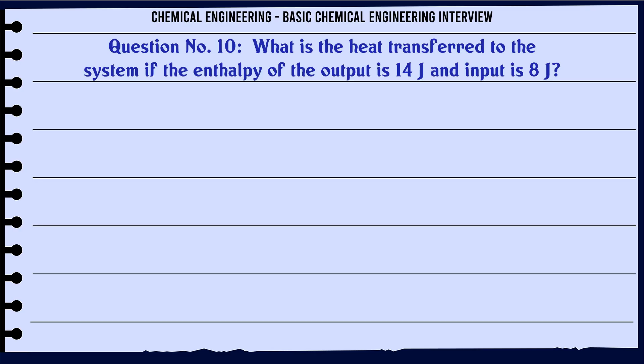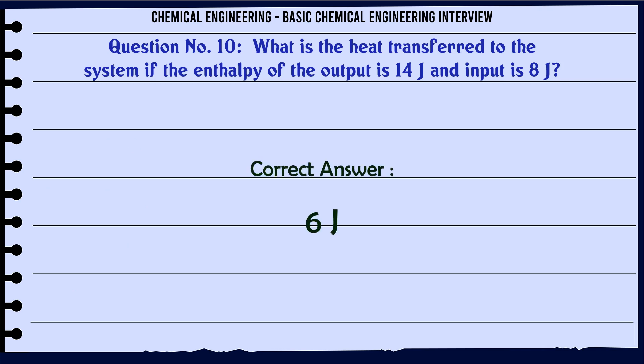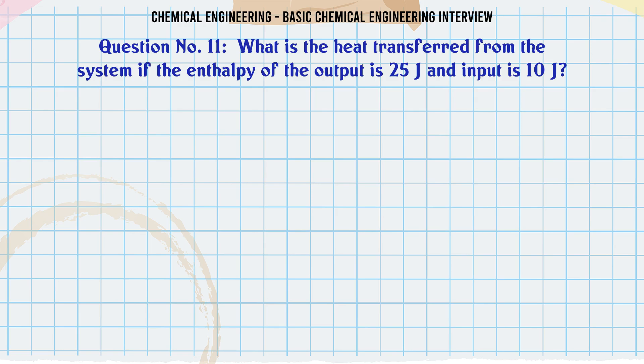What is the heat transferred to the system if the enthalpy of the output is 14 J and input is 8 J? A) 4 J. B) 6 J. C) 8 J. D) 10 J. The correct answer is 6 J.